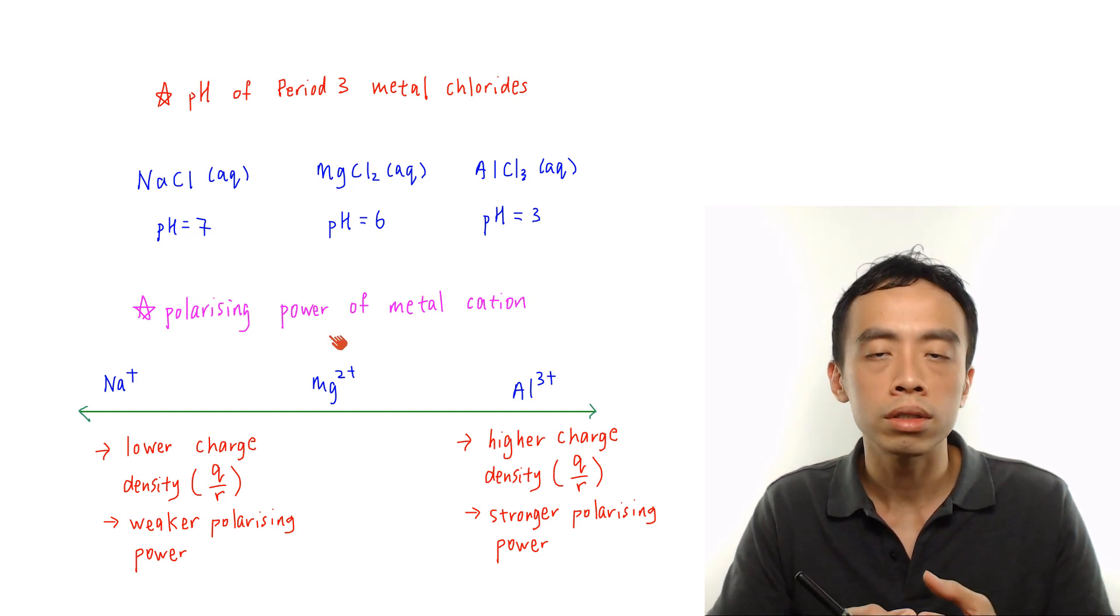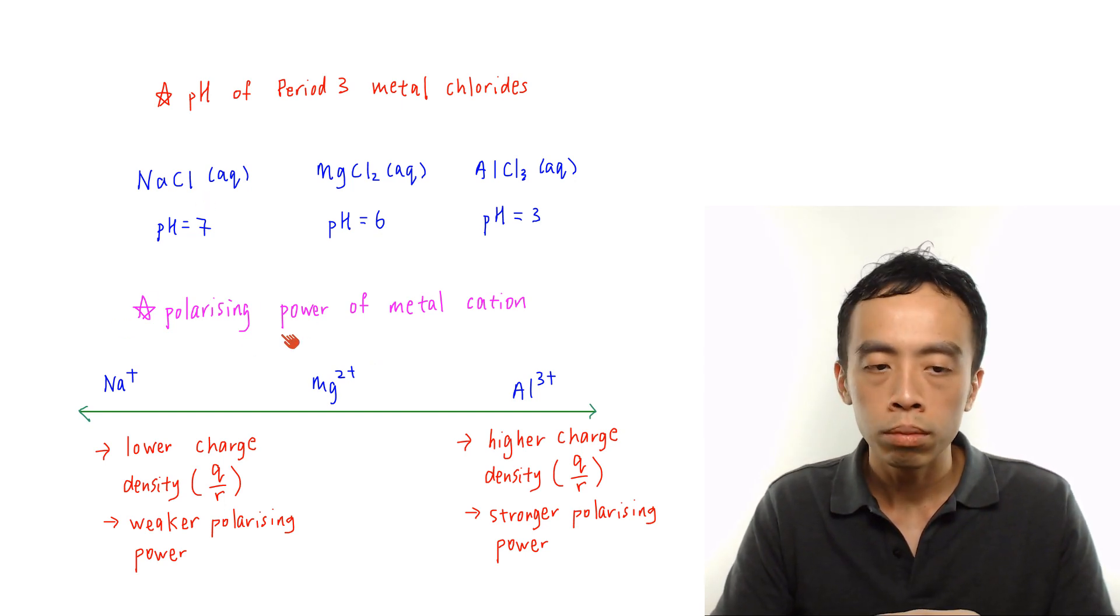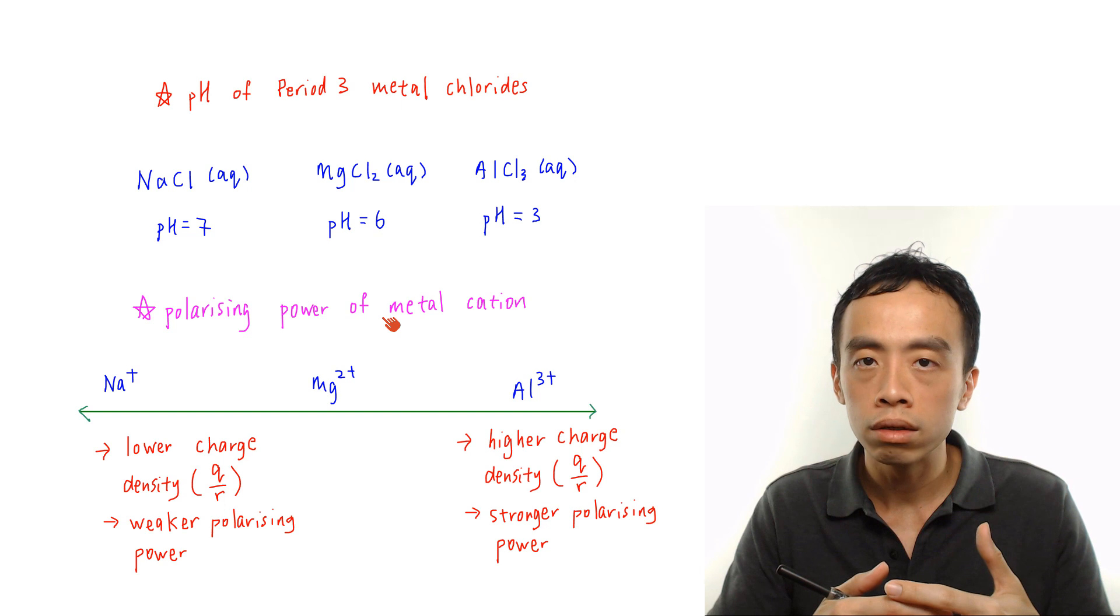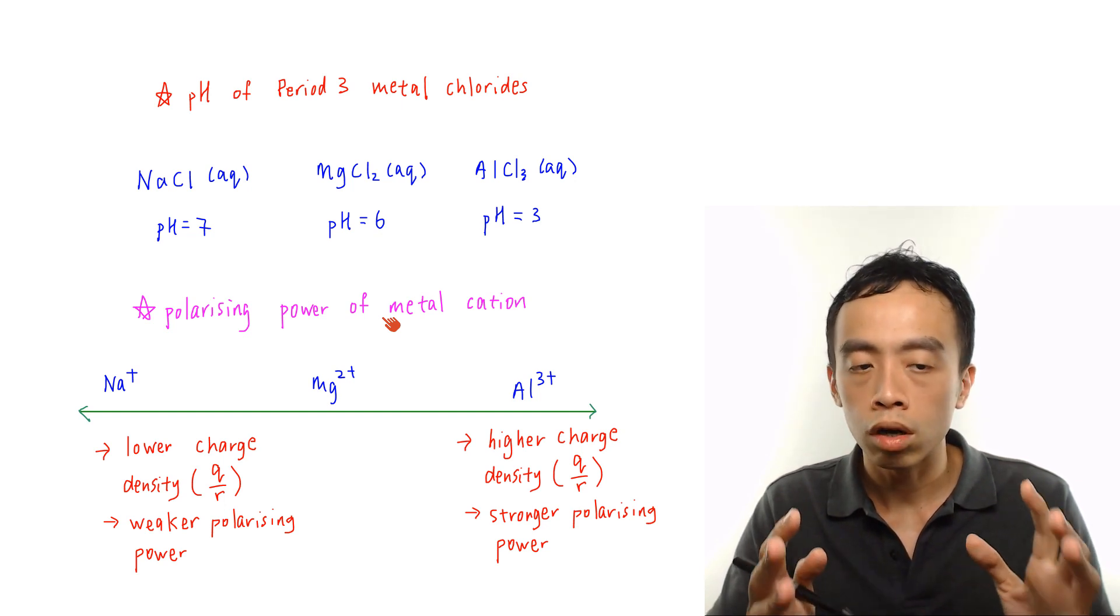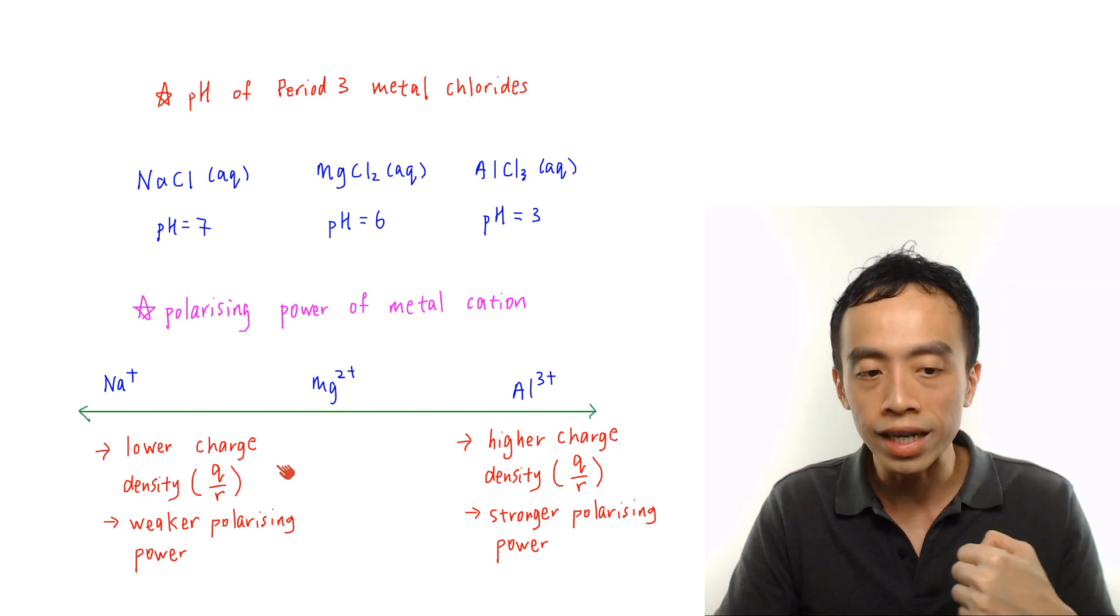And there are a few other terms such as enthalpy change of hydration for metal cations is also tied to polarizing power. So we need to be very familiar with this concept, which is what we call polarizing power, which is related to charge density.